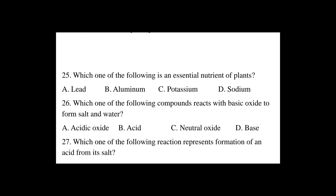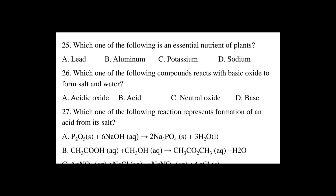Question number 25: Which one of the following is an essential nutrient of plants? A. Lead, B. Aluminum, C. Potassium, D. — The essential nutrients are NPK: nitrogen, phosphorus, and potassium. Potassium is a primary mineral nutrient. Micronutrients are nutrients required by plants in relatively small amounts.